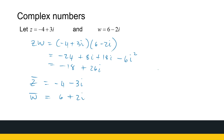The complex conjugate of Z is minus 4 minus 3i, and the complex conjugate of W is 6 plus 2i. We can also look at the complex conjugate of the product ZW: that's minus 18 minus 26i. We can then ask — is there a relationship between the complex conjugate of ZW and the product of the individual complex conjugates? You can multiply them to check, and we will formalize this relationship shortly.